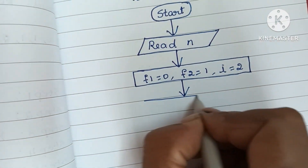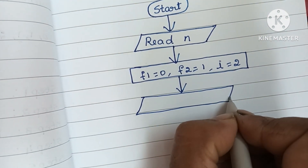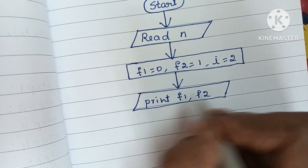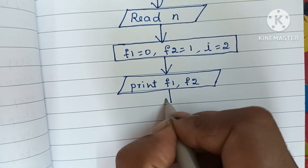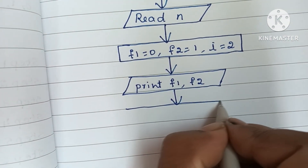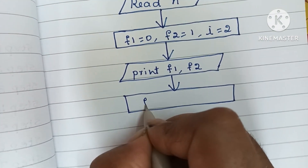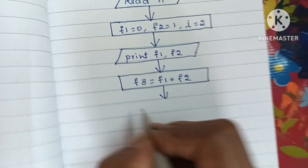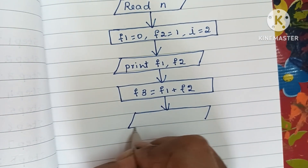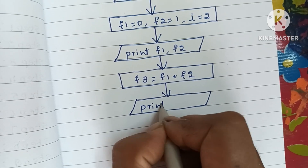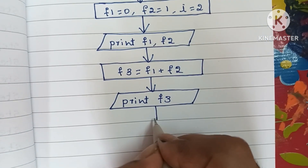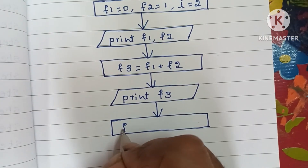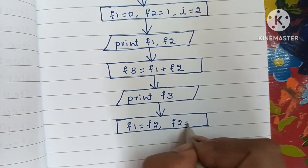Next we print F1 and F2 — output values are always written within a parallelogram shape. Then we calculate F3 equals F1 plus F2, written in a rectangular process box. Next we print F3, also in a parallelogram. Then we interchange: F1 takes the value of F2, and F2 takes the value of F3.